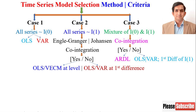When you apply Johansen cointegration, if a cointegrating equation exists, then you estimate OLS or the vector error correction model at level. If there is no cointegrating equation, then you estimate OLS or VAR at first difference, because in this scenario the non-stationary time series becomes stationary at first difference.